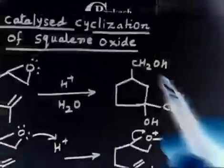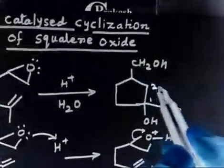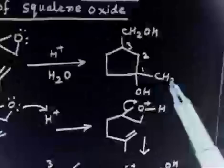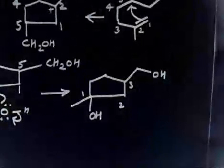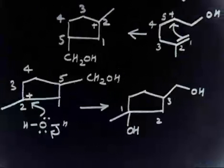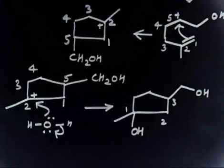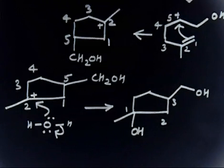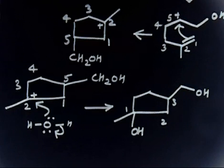Let us verify: call carbon number 1 as this carbon — so carbon 1, carbon 2, carbon 3. At carbon number 1 we have the CH₃ group and the OH group. Carbon 3 contains the CH₂OH group. This is the same product. This was an easy problem — if you can understand this one, there is nothing new in this course. Let us go to the next problem.